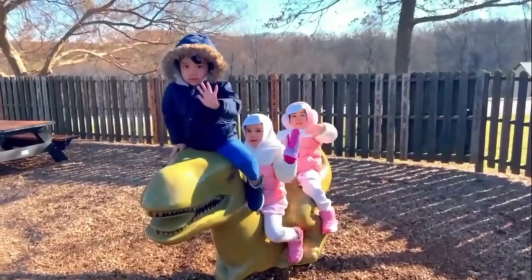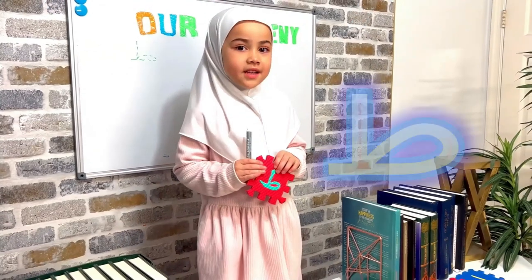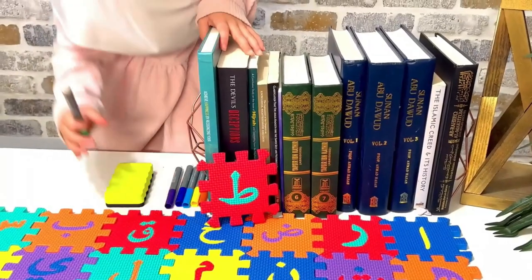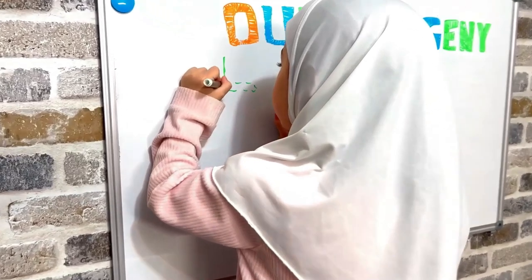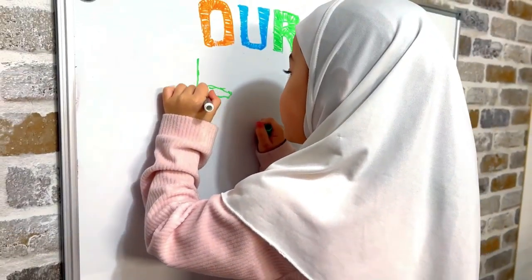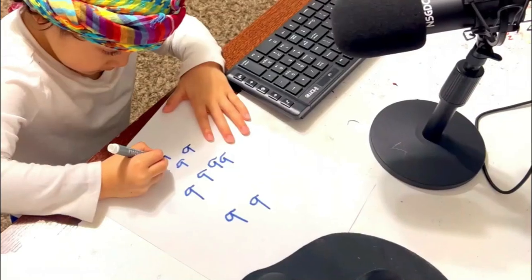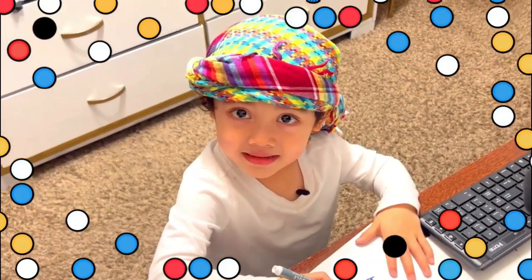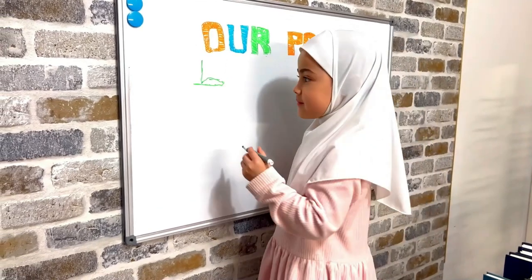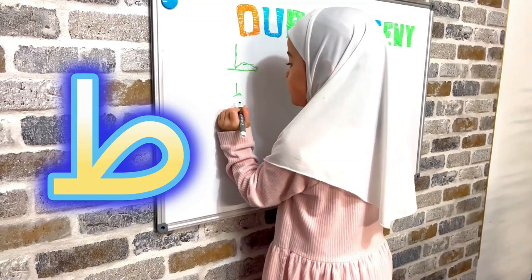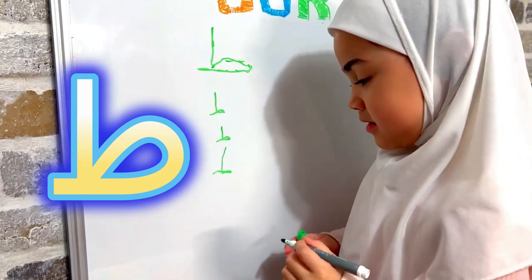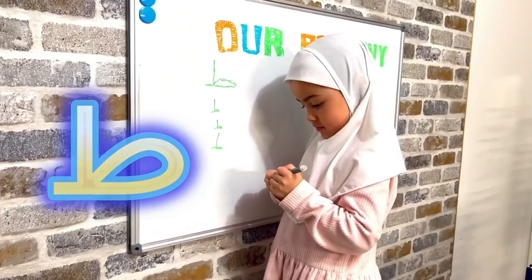Assalamu alaikum! Today we're going to learn how to write. All right, pay attention. Down and around. How are you doing, Sire? It's just that easy. Alhamdulillah. All right, Sissy, give us a few more examples of the letter thaa. Down and around. Down and around. The more you practice, the more you get better.